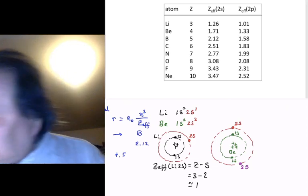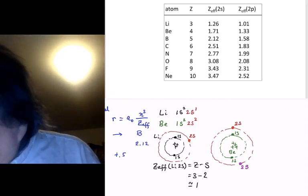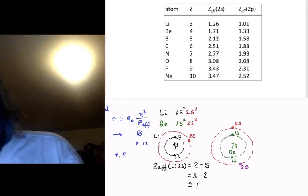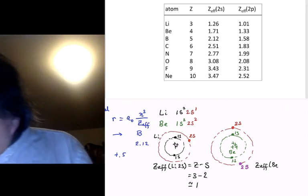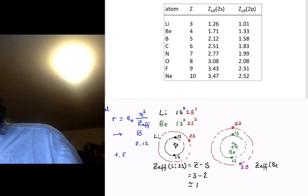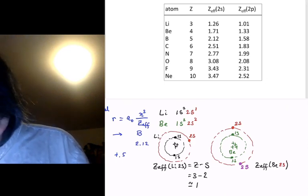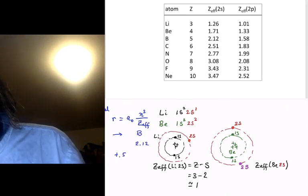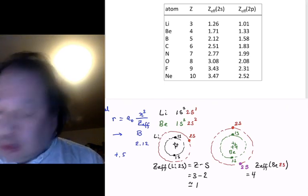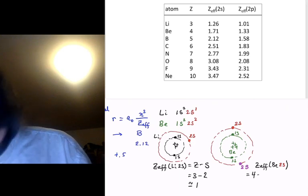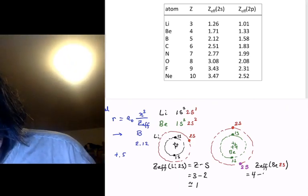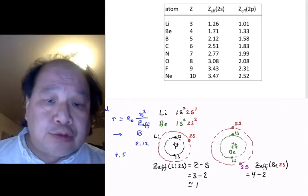Now we want to figure out what Z-effective is for beryllium. Z-effective for beryllium, for the 2S electron, the red 2S electron, will be equal to 4 because that's the nuclear charge. The 1S electrons are still entirely inside. They shield completely, minus 2. And now we get to the interesting thing.